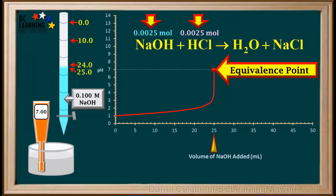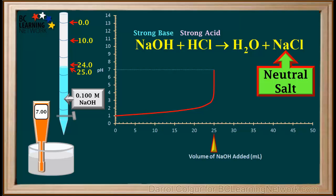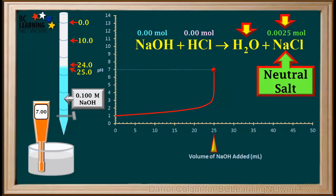At the equivalence point, we added 25 milliliters or 0.025 liters of 0.1 molar NaOH, which is 0.0025 moles, to 0.0025 moles of HCl. The equivalence point is defined as the point at which just enough base is added to neutralize all of the acid. The NaOH and HCl completely react with no excess of either reactant, forming 0.0025 moles of the neutral salt NaCl. So at the equivalence point, only water and a neutral salt remain.